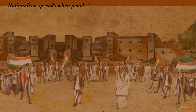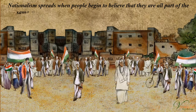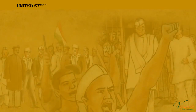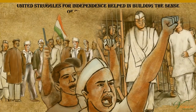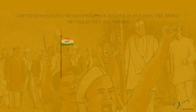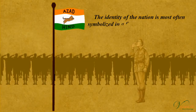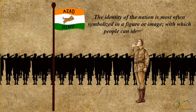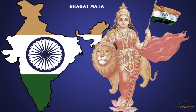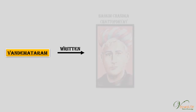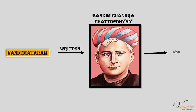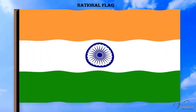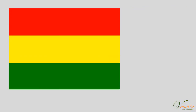Nationalism spreads when people begin to believe that they are all part of the same nation — when they discover some unity that binds them together. The united struggles for independence helped build the sense of collective belonging. The identity of the nation is most often symbolised in a figure or image with which people can identify. The image of Bharat Mata was the pictorial representation of the motherland, embodied in the song Vande Mataram.